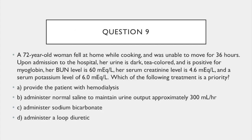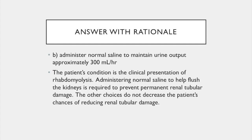Question 9. A 72-year-old woman fell at home while cooking and was unable to move for 36 hours. Upon admission to the hospital, her urine is dark, tea-colored, and positive for myoglobin. Her BUN level is 60, her serum creatinine level is 4.6, and serum potassium level is 6.0. Which of the following treatments is a priority? A. Provide the patient with hemodialysis. B. Administer normal saline to maintain urine output approximately 300 mL per hour. C. Administer sodium bicarbonate. Or D. Administer a loop diuretic. The answer is B. The patient's condition is the clinical presentation of rhabdomyolysis. Administering normal saline to flush the kidneys is required to prevent permanent renal tubular damage. The other choices do not decrease the patient's chances of reducing renal tubular damage.